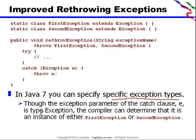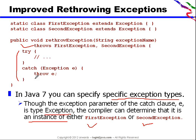The exception parameter of the catch clause E is of type exception. The compiler can determine that it is an instance of either first exception or second exception. So you can specify in Java 7 like this: throws first exception, second exception, even if your code is throwing exception.